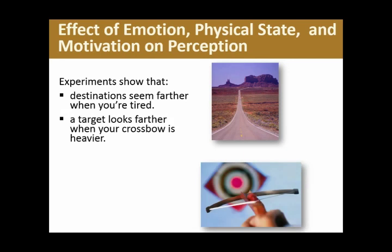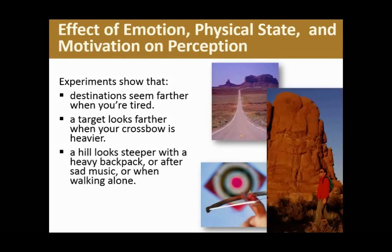A target looks farther when your crossbow is heavier. They did an experiment where participants were given a crossbow and asked to estimate how far away the target was. For half the participants the crossbow was normal weight; for the other half it had lead added to make it heavier. The ones holding the heavier crossbow estimated a farther distance, implying that a heavier pack makes distances seem farther. A hill looks deeper when you're wearing a heavy backpack than a light one, deeper when you've been listening to sad music than happy music, and deeper when you're walking alone than with a partner. All of these factors go into how we perceive our situations.